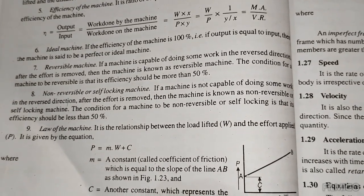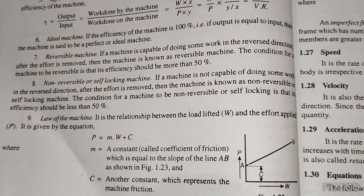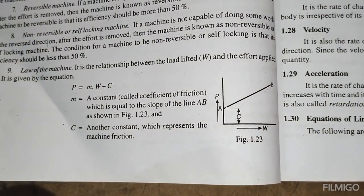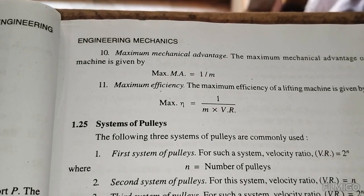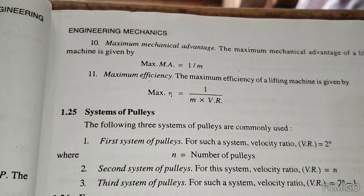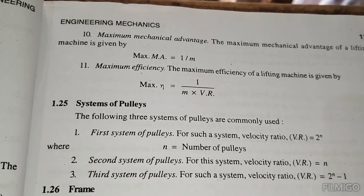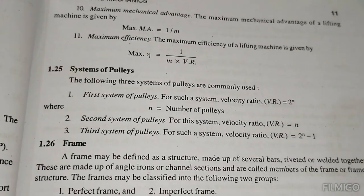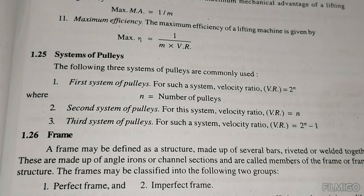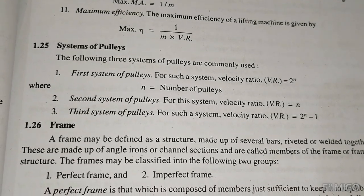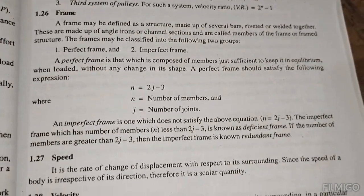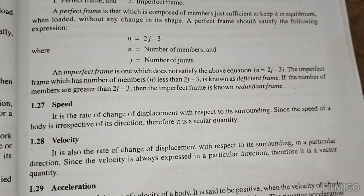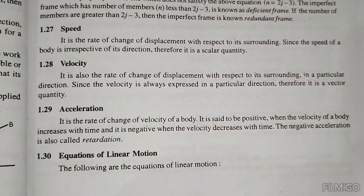A reversible machine should have efficiency more than 50%. An irreversible machine has efficiency less than 50%. The law of machine: P equals m W plus c. Maximum mechanical advantage M_A equals 1 divided by m. Maximum efficiency of a lifting machine equals 1 divided by m times V_R. For the first system of pulleys, V_R equals 2 to the power n; second system: n; third system: V_R equals 2n minus 1.